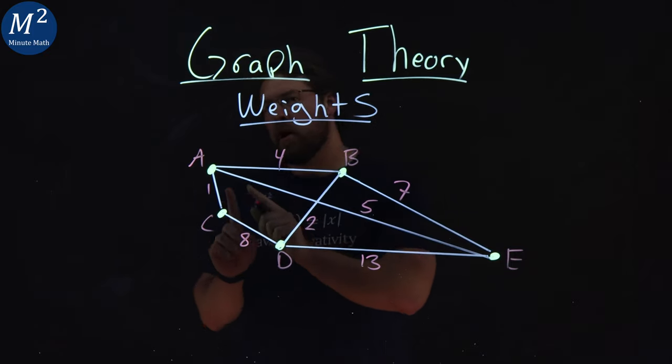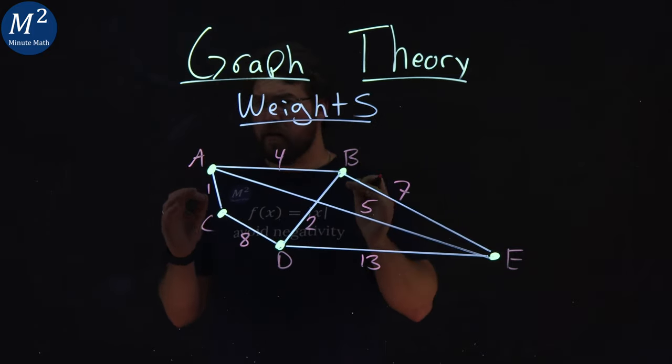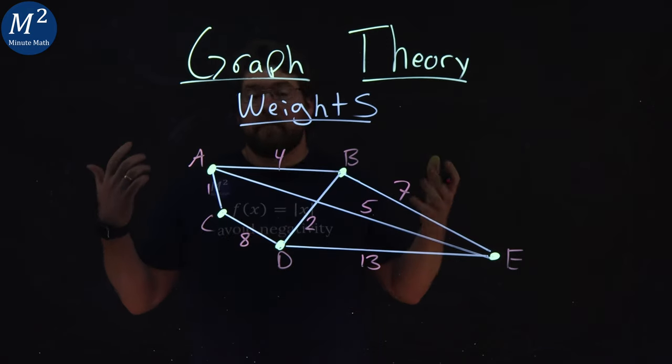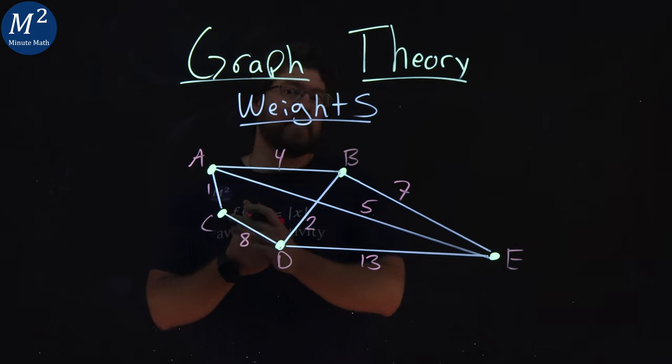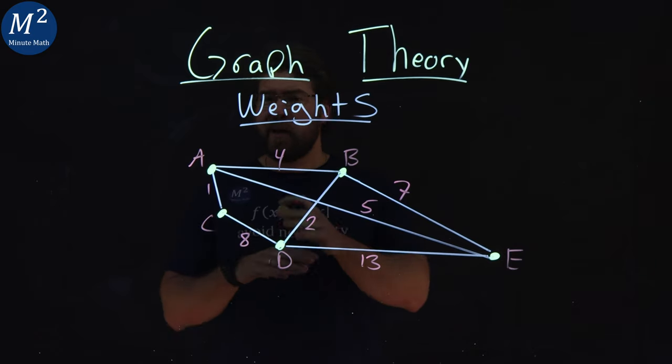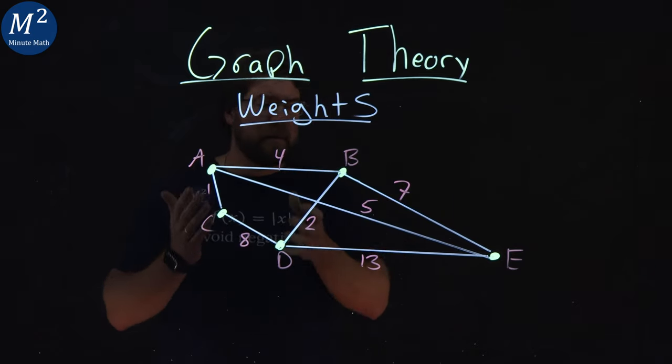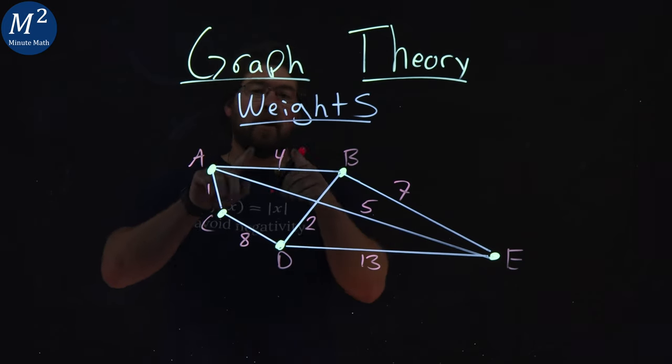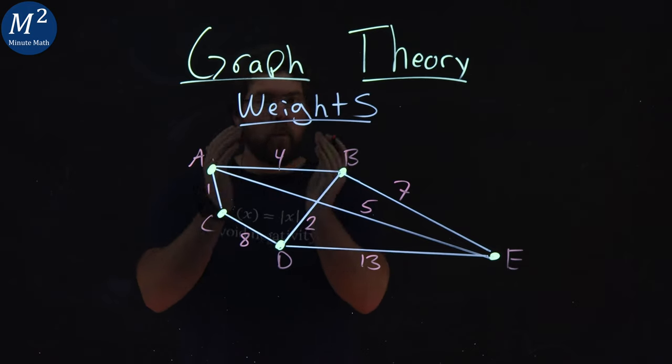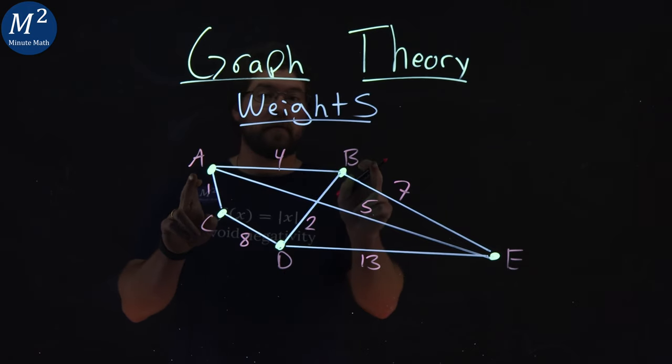The weights are the cost from traveling from one vertice to another vertice. This can be a physical cost like a dollar amount being represented. It can be a distance, it can be the time it takes to travel, or just basic units like we have here. That's a cost now from traveling from A to B—it costs us four. That's our weight. So the weight from A to B is four.